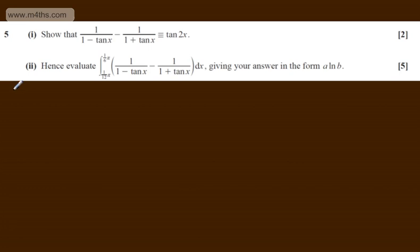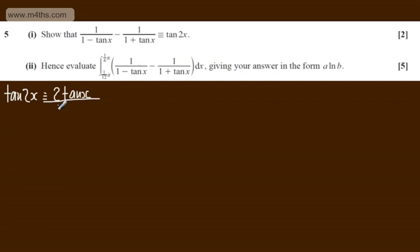Let's look at the double angle identity for tan. We can write tan 2x in the form 2 tan x over (1 minus tan squared x). So all I'm going to do is combine these fractions and simplify.